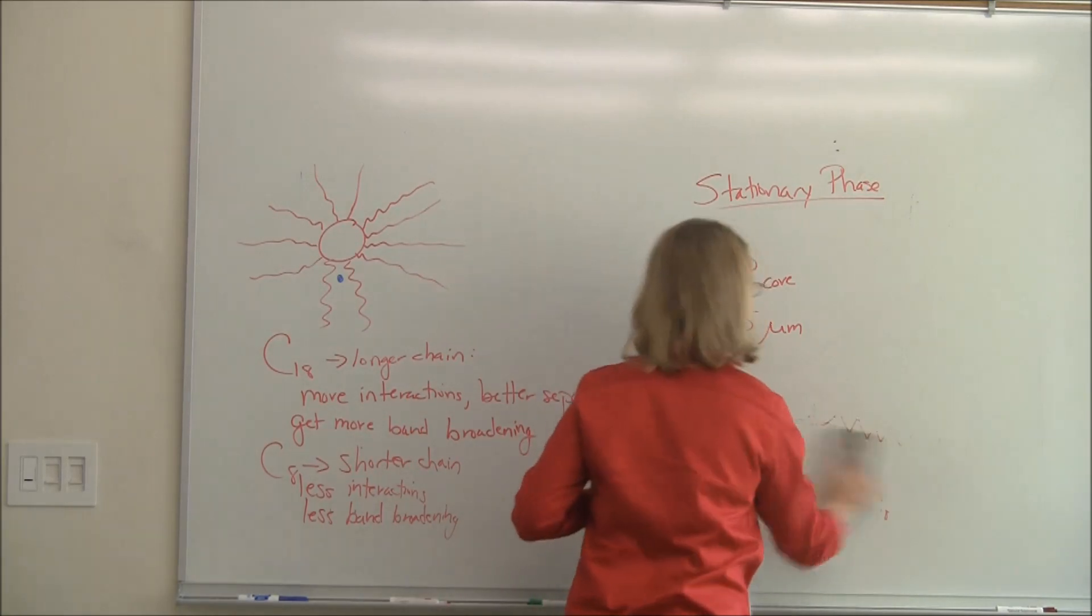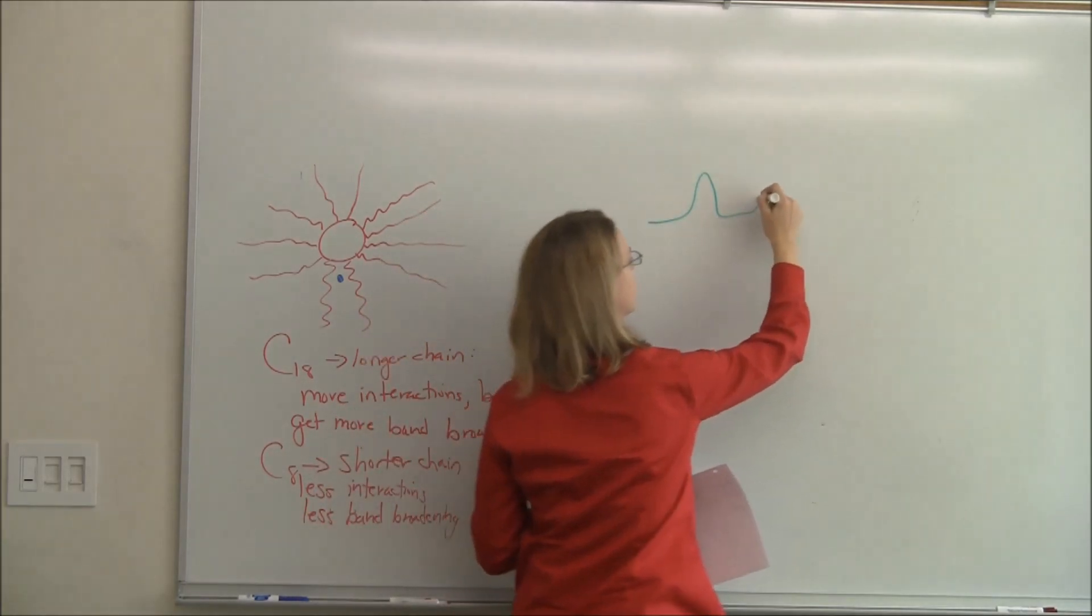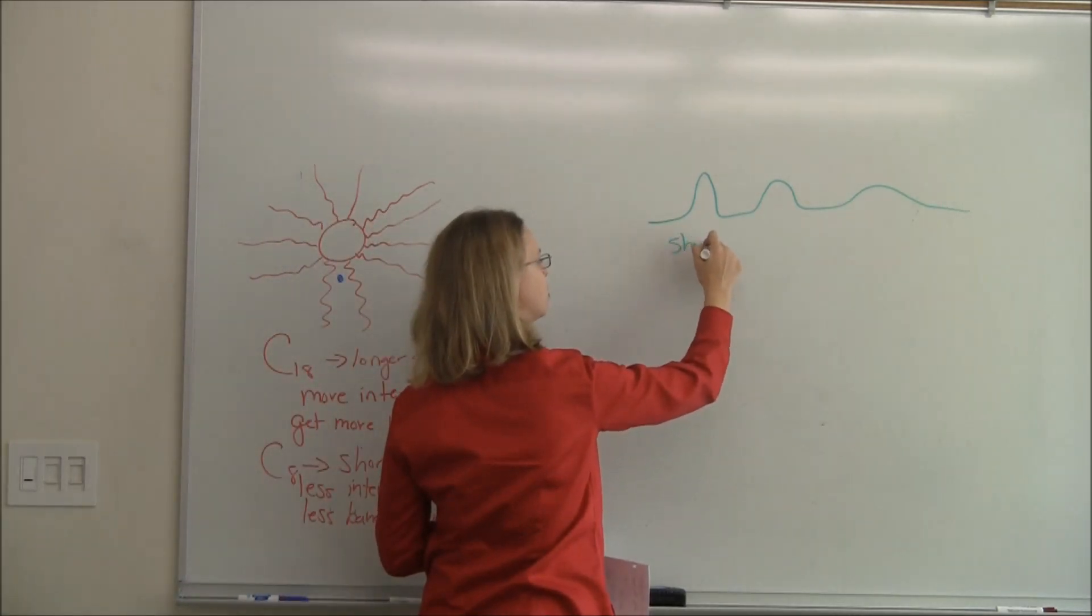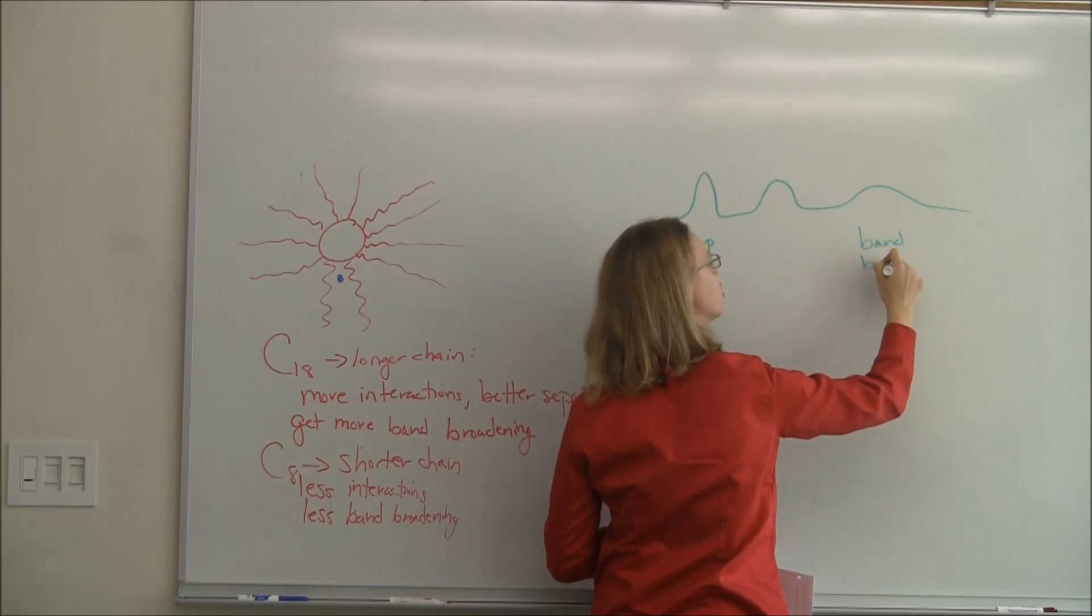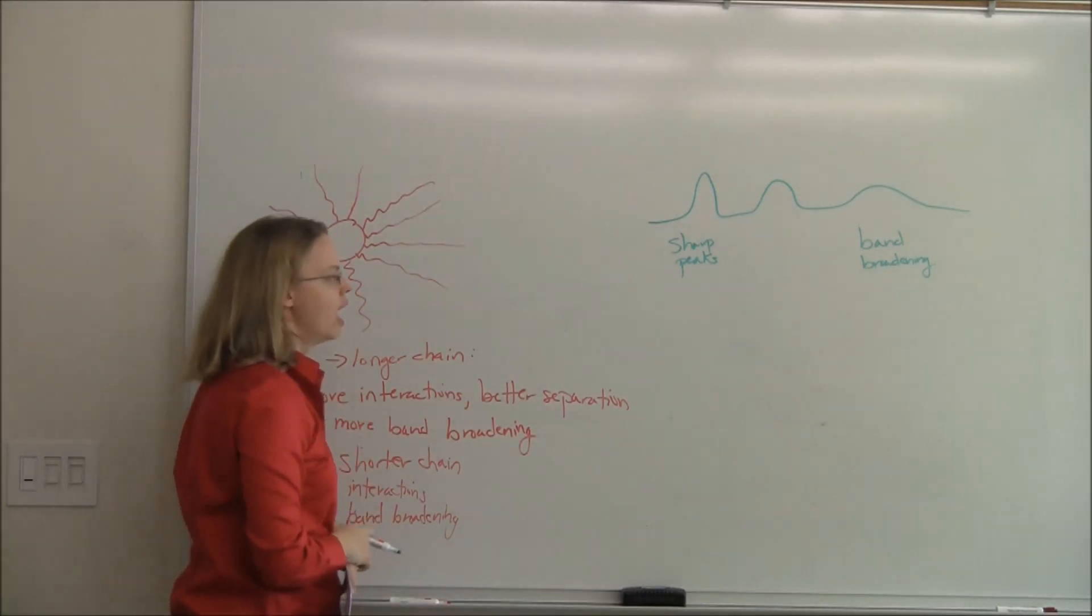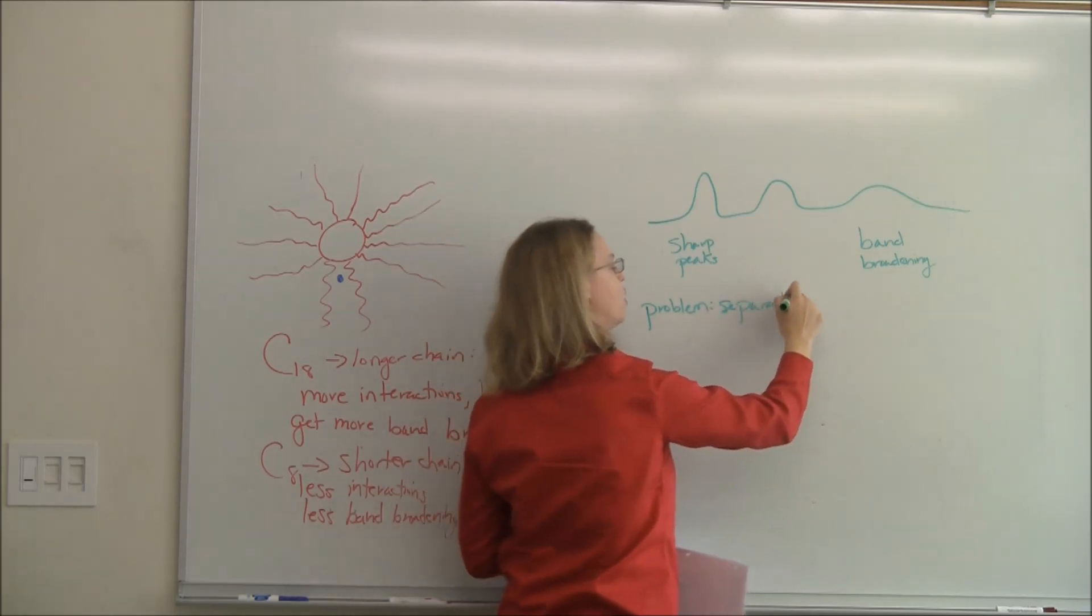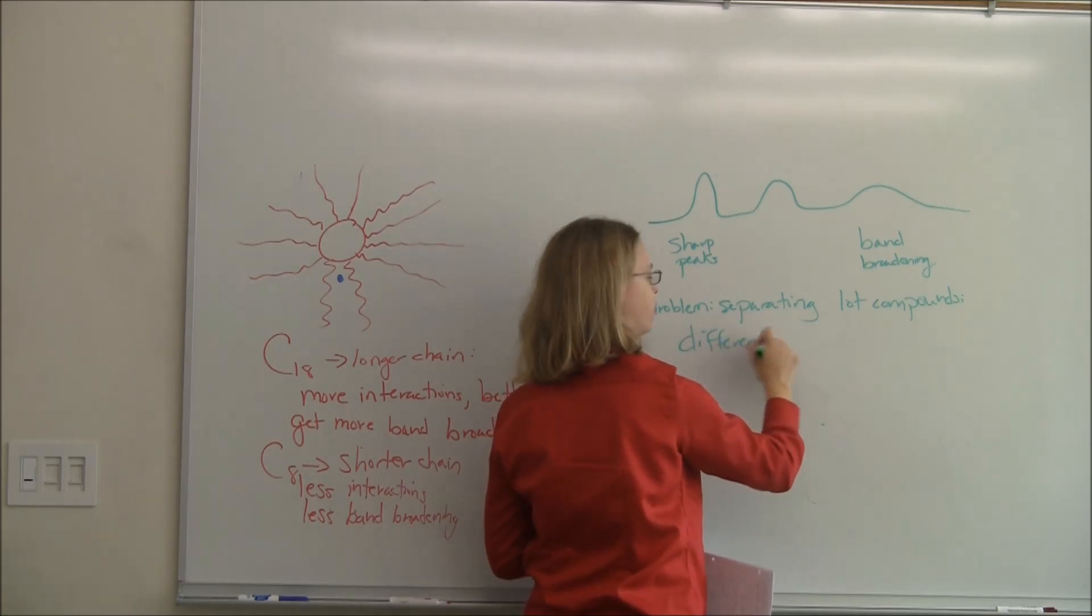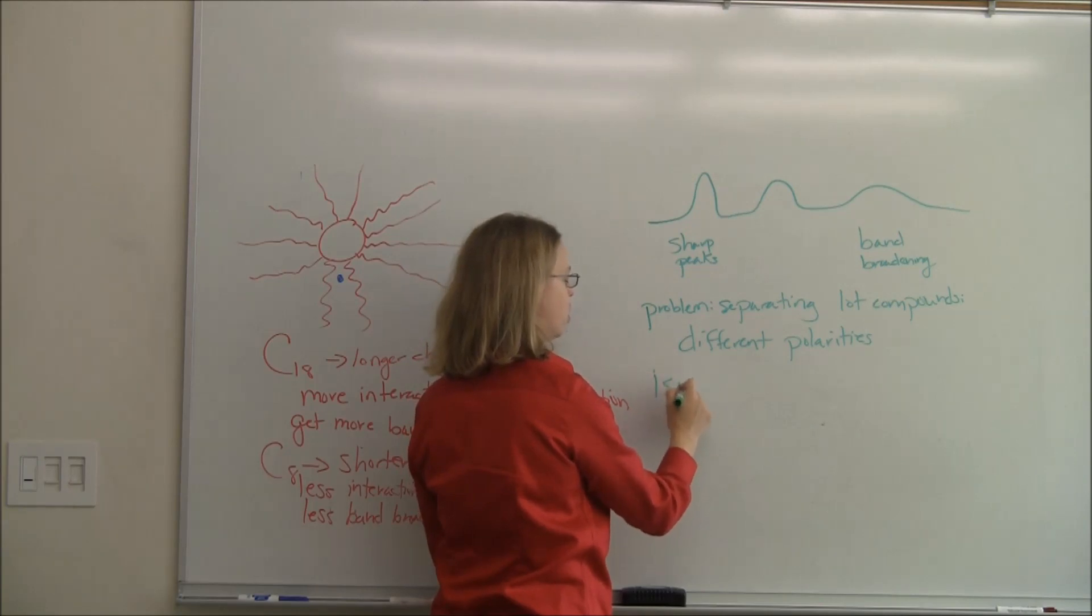For chromatography, there's a slight problem sometimes that comes about. So when we have a chromatogram, this is a very extreme case of a chromatogram, we oftentimes get very sharp peaks at first. But peaks that stay in the column a long time end up having a lot of band broadening. So they're low and wide. And so the problem is that that's not very easy for separations when we get out there. The problem is just separating a lot of compounds with very different polarities.